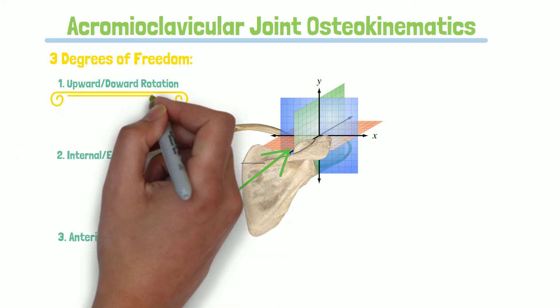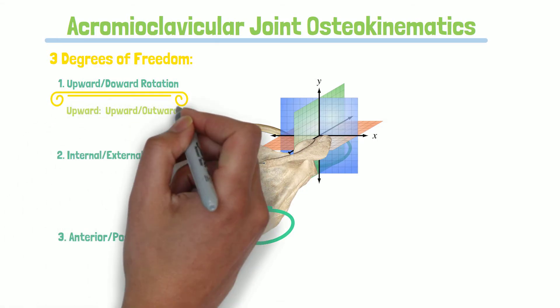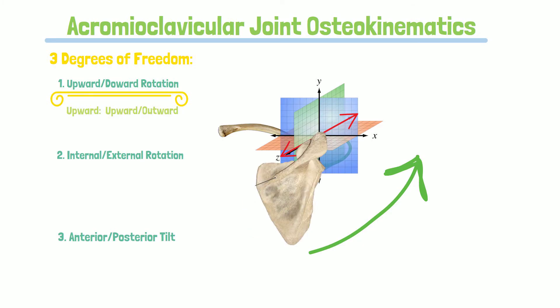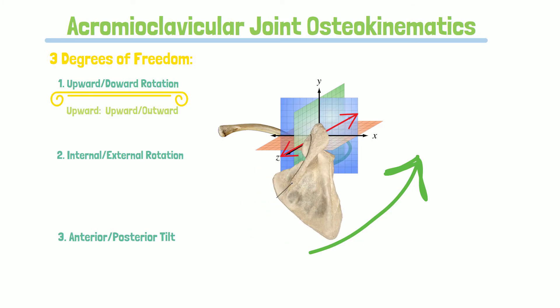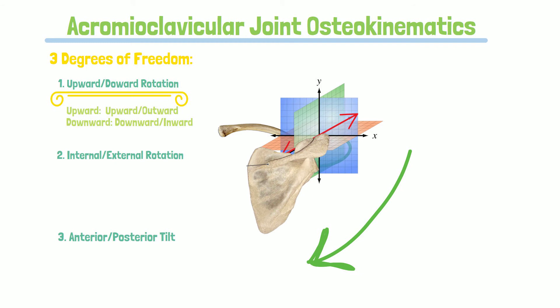In order to best visualize upward and downward rotations, follow the inferior angle of the scapula. Here the scapula moves on a stationary clavicle around the z-axis. You can observe the inferior angle of the scapula moving in upward and outward directions. Downward rotation is the opposite — it is observed as a downward and inward pivot of the inferior angle.